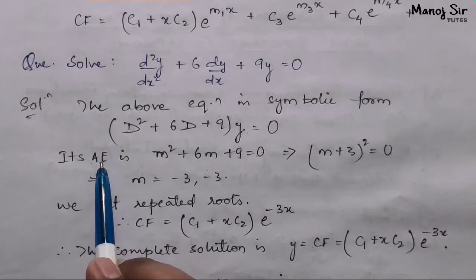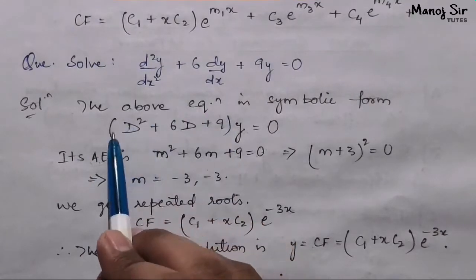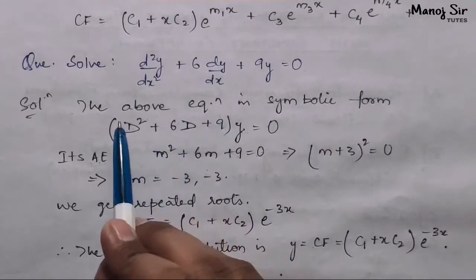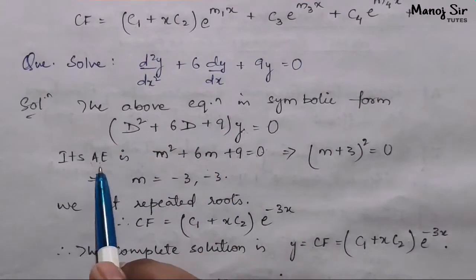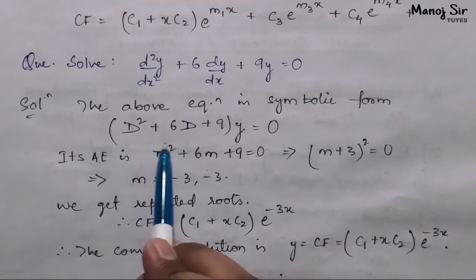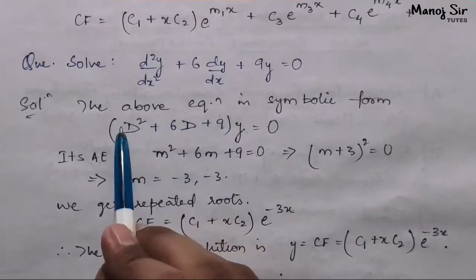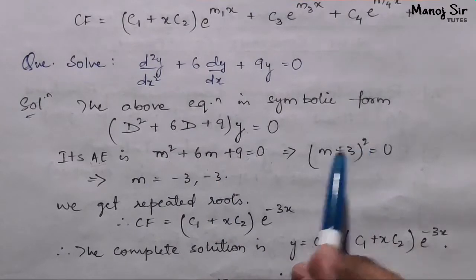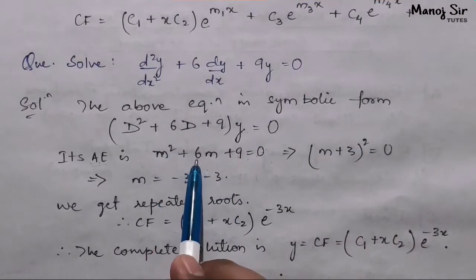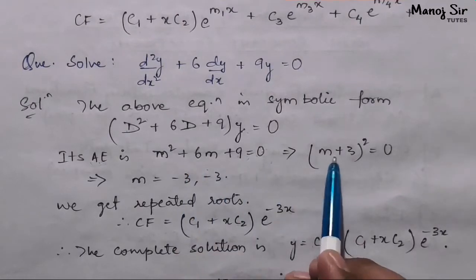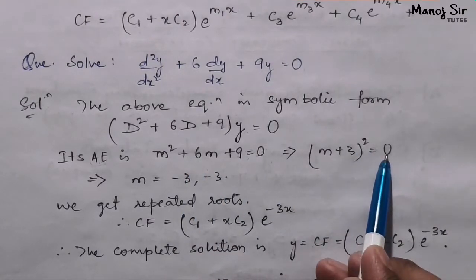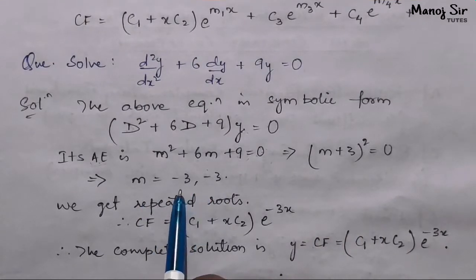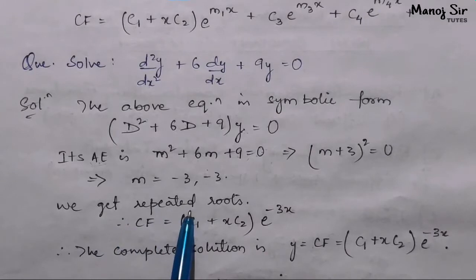Basically in the auxiliary equation we are equating this coefficient of y to 0. On solving this we will get (m + 3)² because this is a² + 2ab + b², which is (a + b)² = 0. It means we are going to get m = -3 and -3. Hence we get repeated roots.